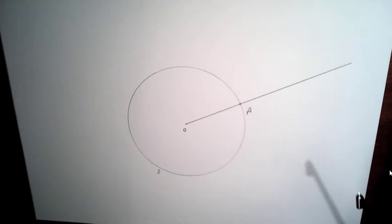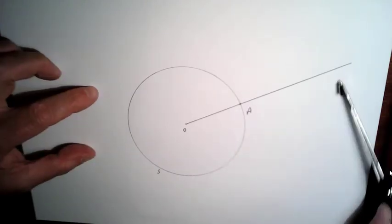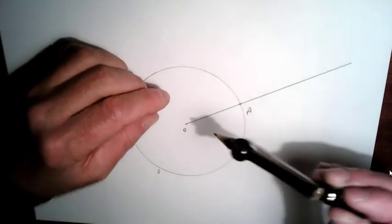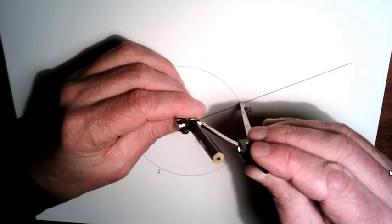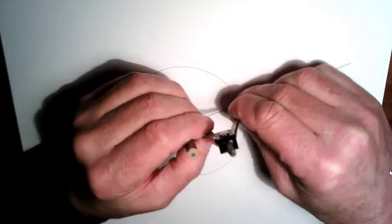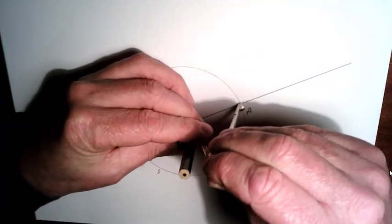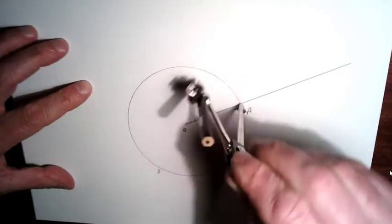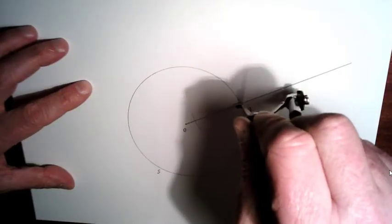What we're going to do is construct a perpendicular line to this ray through A. So what we're going to do is take our compass, put it at A, and we're going to draw two arcs. So I'm going to draw one arc here, and then come around here, draw another arc.